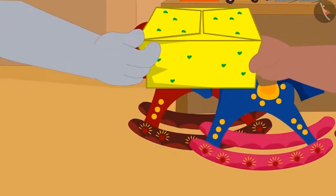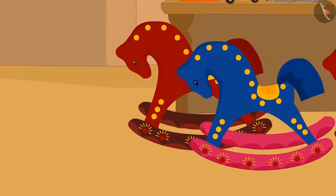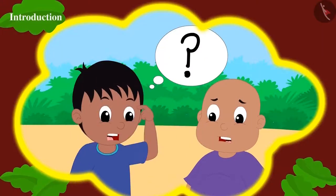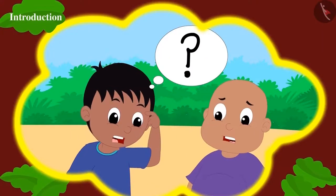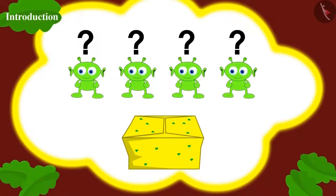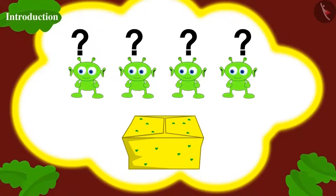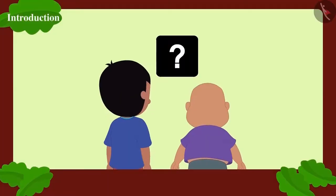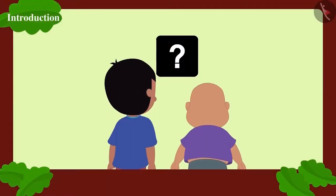They bought a box of twelve flower pots from Gaggu. Now they are thinking: if they have to divide the flower pots equally among all of Jeev's friends, how many flower pots will each friend get? Children, can you help Raju and Bablu find the answer to this?